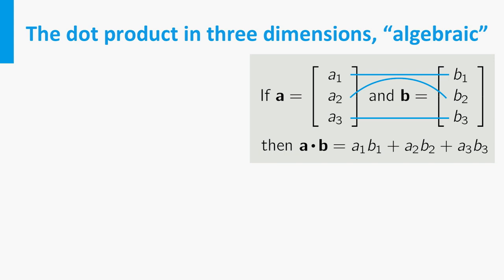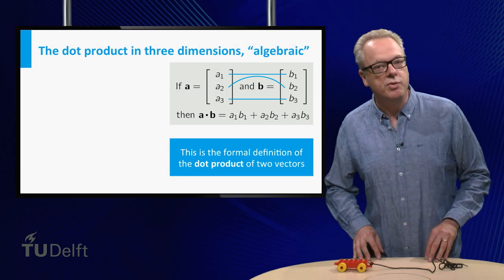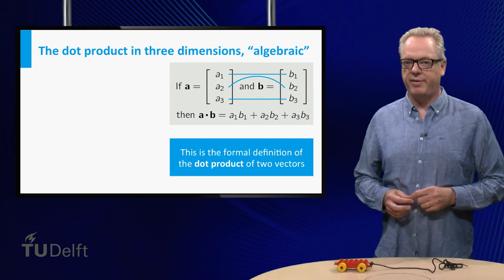This is our formal definition of the dot product of two three-dimensional vectors. The dot product of two two-dimensional vectors is defined in a similar fashion.